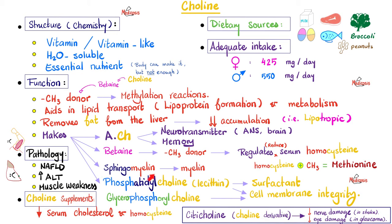Choline helps make fat — specifically sphingomyelin, which is used to make myelin, which covers, insulates, and increases conduction speed in many nerves. Furthermore, choline helps make phosphatidylcholine, the famous lecithin, which is a surfactant and is important for cell membrane integrity. With roughly 100 trillion cells in your body, you have 100 trillion cell membranes with integrity — thanks to choline. Choline also helps make glycerophosphorylcholine, also important for the cell membrane.